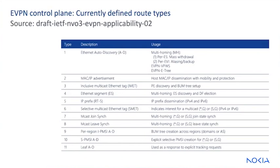The first group is basic EVPN. This includes RT2 and RT3. RT2 is used for the distribution of IP and MAC addresses to populate forwarding tables and suppress broadcast flooding. RT3 is used for the auto-discovery of remote VTEPs through inclusive multicast routes. This advertises membership of a specific Layer 2 domain, which is a VNI within a given VXLAN domain. It's discussed in RFC 7432.